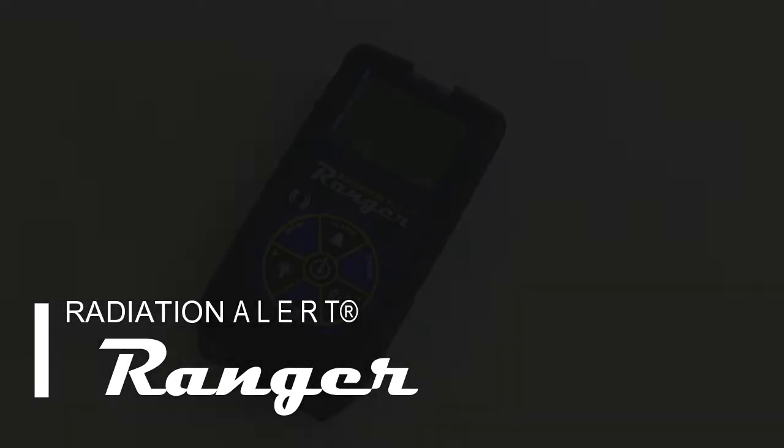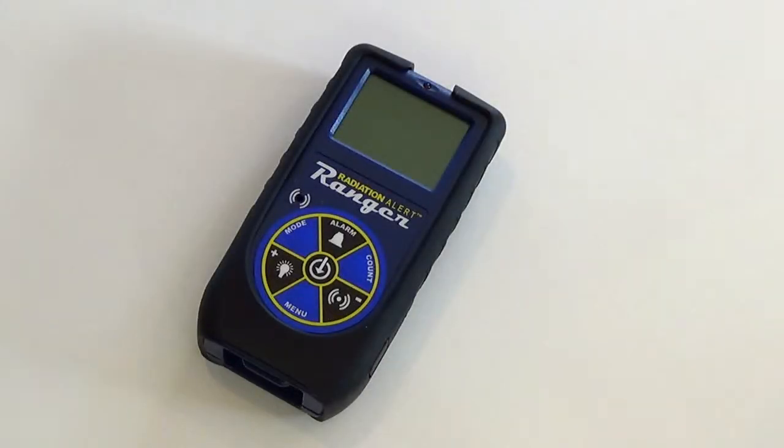Hello and welcome to the Radiation Alert Quick Start Guide. The Ranger is an ionizing radiation detector that detects alpha, beta, gamma, and x-ray.